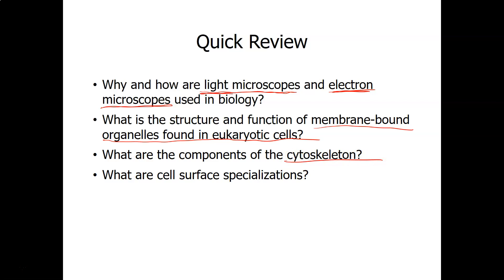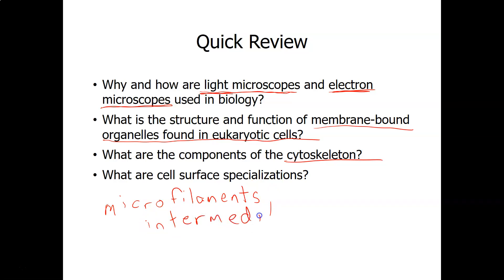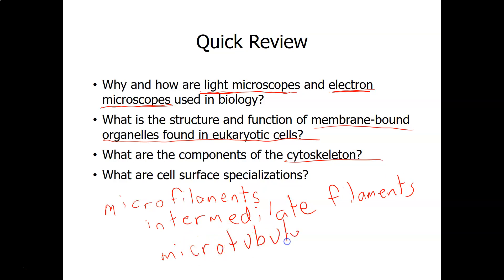The components of the cytoskeleton — remember there are three fibers, starting from smallest: microfilaments, which form a border close to the plasma membrane; intermediate filaments, which give shape to the cell; and microtubules, which are found in cilia and flagella and can also facilitate movement inside the cell. For cell surface specializations, we talked about microvilli — folding of the plasma membrane which increases surface area — and microtubules found in cilia and flagella.